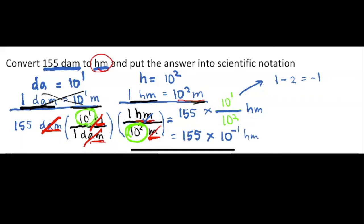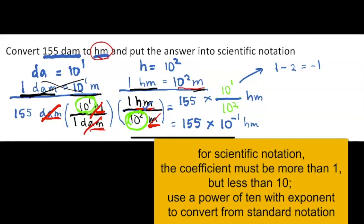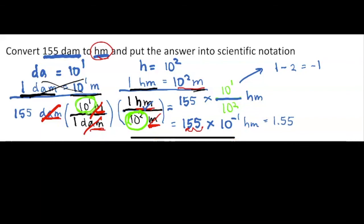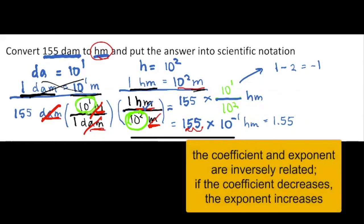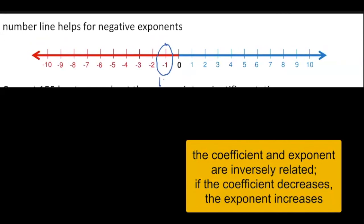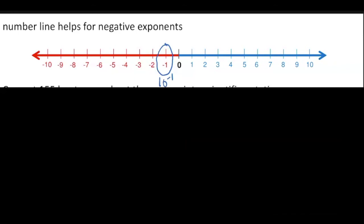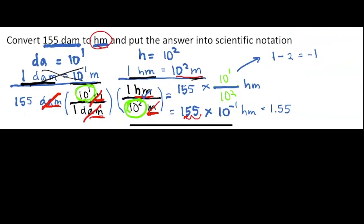The last step is to convert to scientific notation. Move the decimal in 155 to get 1.55. The number got smaller, so the exponent needs to get bigger. The original exponent was negative 1; increasing by 2 gives 10 to the 1. So the answer in scientific notation is 1.55 times 10 to the 1 hm.